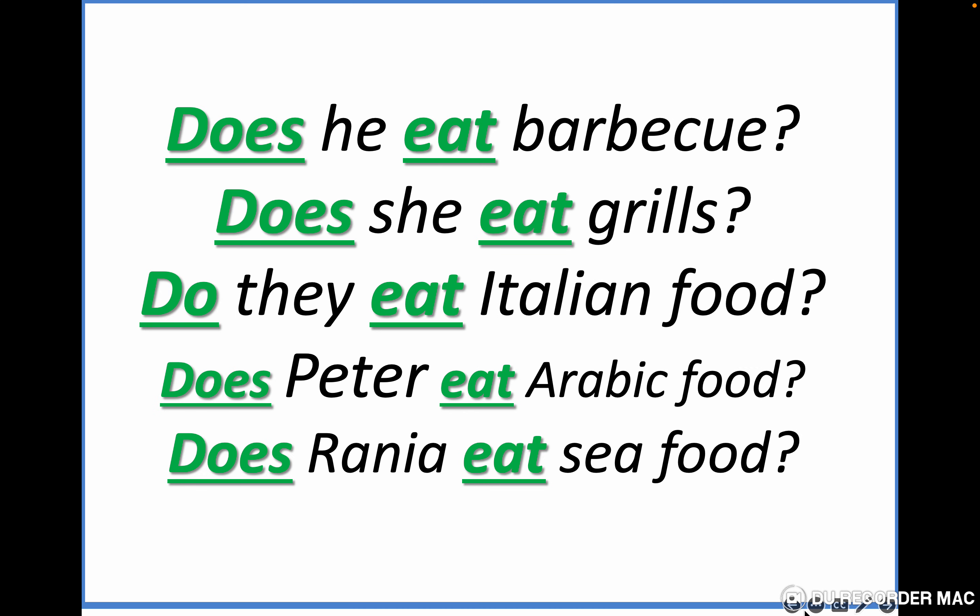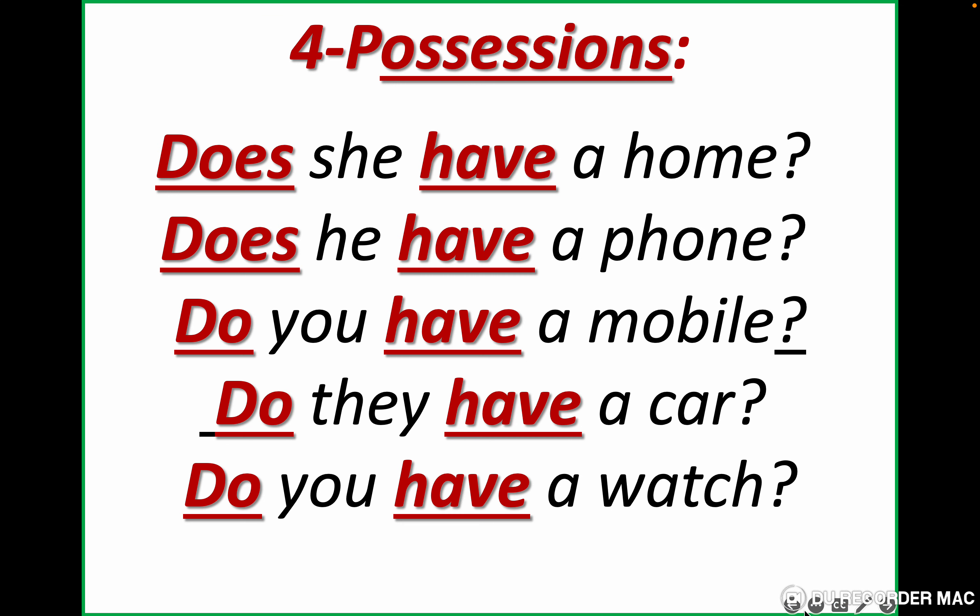We continue with the verb 'eat.' Does he eat barbecue? Does she eat grills? Barbecue and grills is the meat we make outside the house — for example in the mountain, in the forest, we cook it outside. Do they eat Italian food? Does Peter eat Arabic food? Does Rania eat seafood?